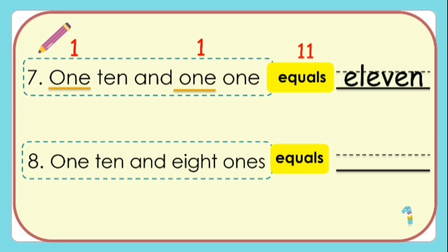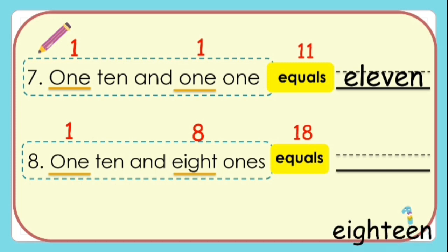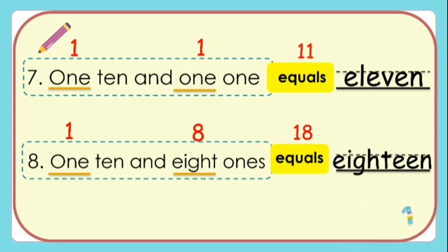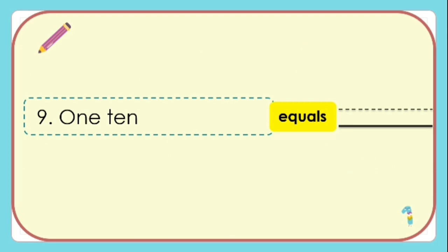Number eight: one ten and eight ones. One ten and eight ones equals 18 — E-I-G-H-T-E-E-N — 18. Number nine: one ten. One ten equals 10 — T-E-N — 10.